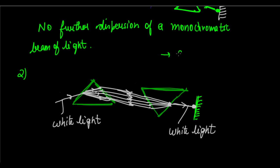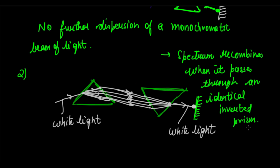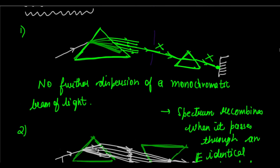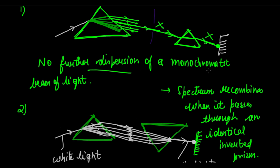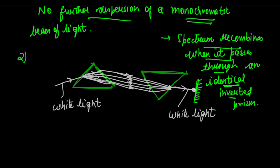So Newton concluded two things: first, there is no further dispersion of a monochromatic beam of light; and second, the spectrum of seven colors recombines to form white light when it passes through an identically inverted glass prism. This concludes dispersion of white light. In the next video we will be looking at the formation of the rainbow.